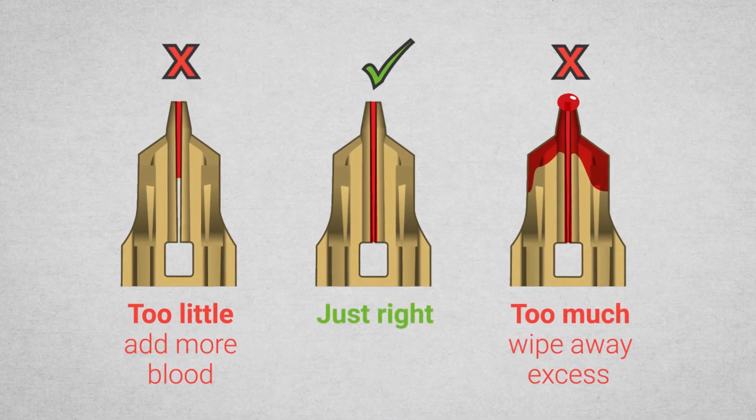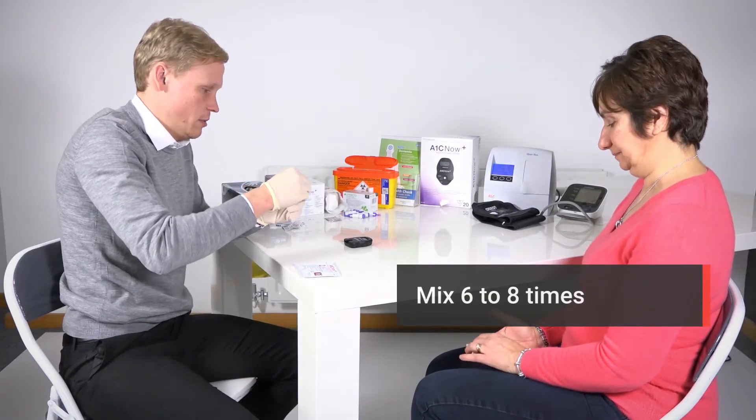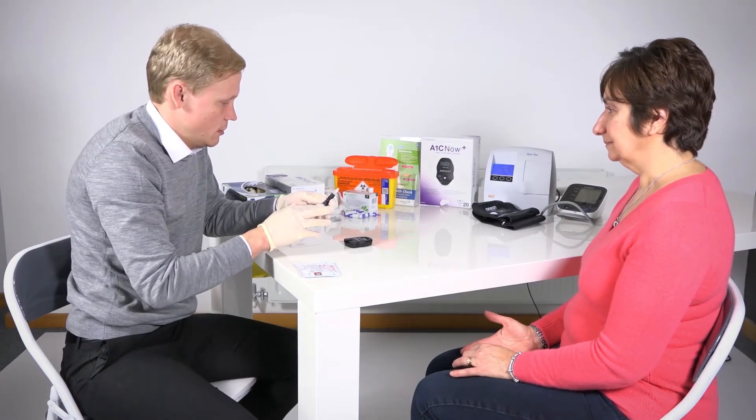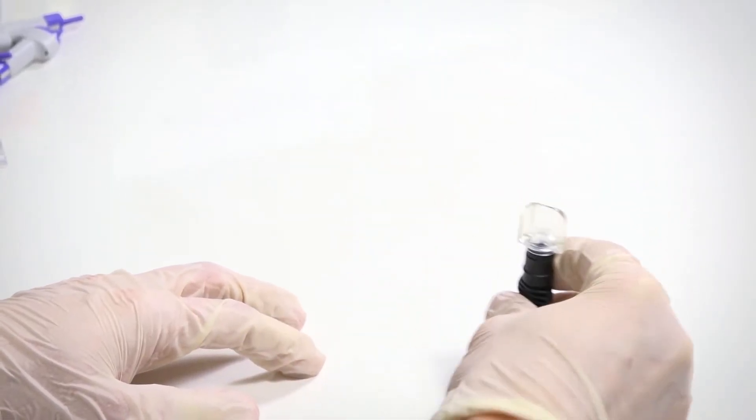Ensure you have collected the correct amount of blood sample. Mix the dilution bottle and blood collector six to eight times. After this, stand the bottle on its end while you prepare pouch number two.